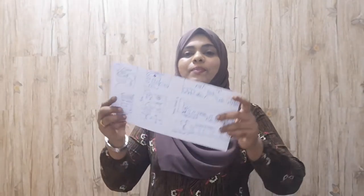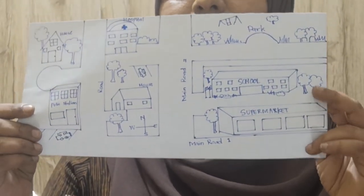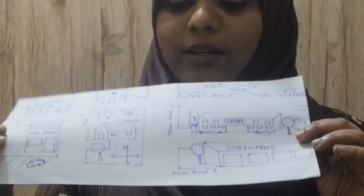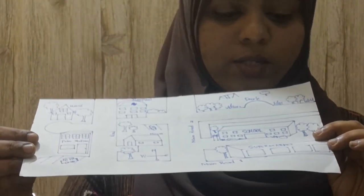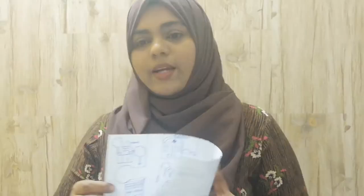A map is a flat drawing of a place or part of the world. Here is a neighborhood map I have drawn — there is a school, hospital, roads, main road, and supermarkets. There are many other types of maps as well, for example: zoom map, city map, world map, bedroom map, park map, and more.